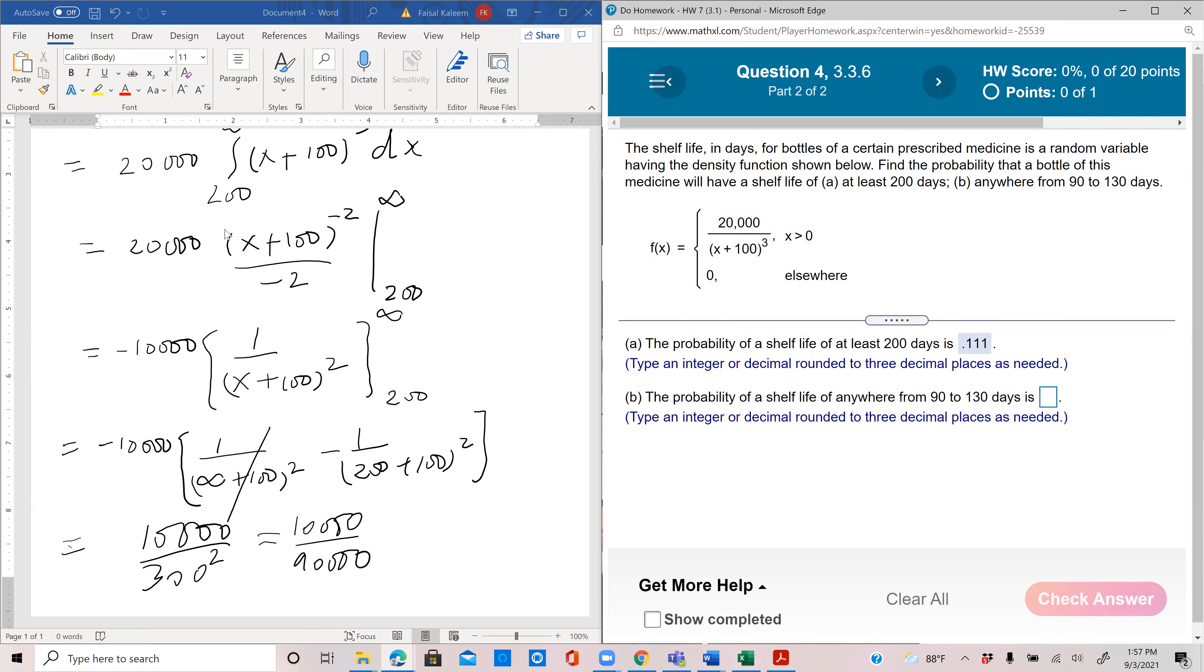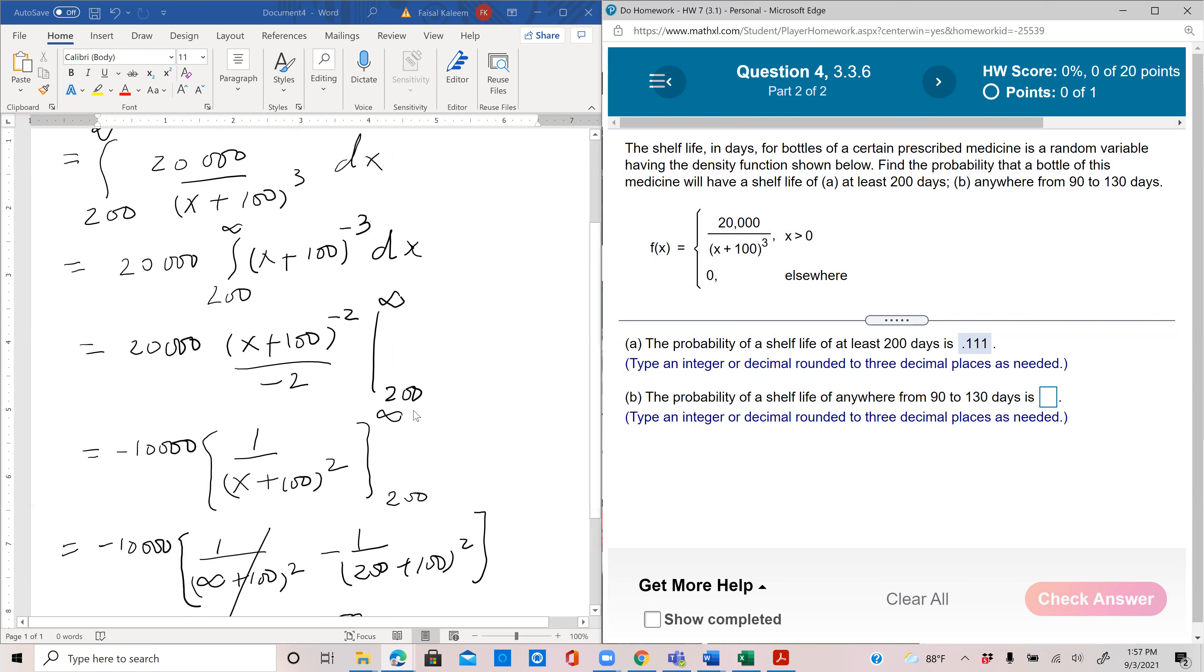Part b: you want the probability that life is anywhere from 90 to 130 days. In this case, you will integrate instead of integrating from 200 to infinity, you will integrate from 90 to 130, and otherwise it's exactly the same.